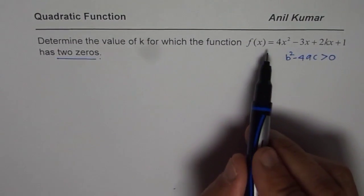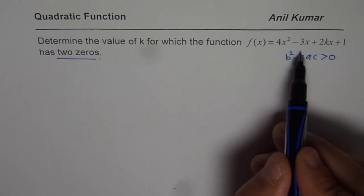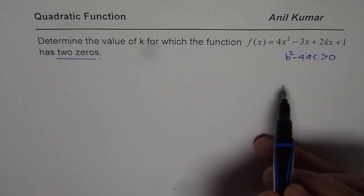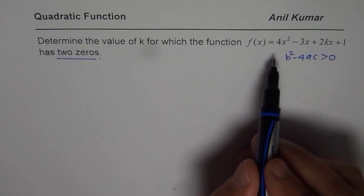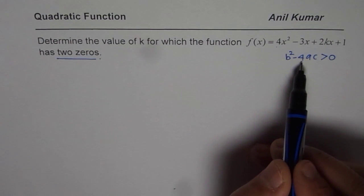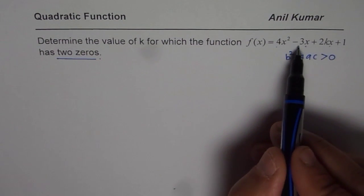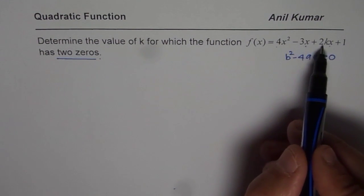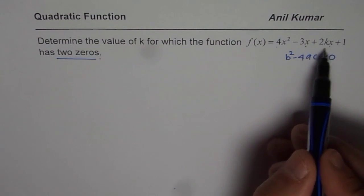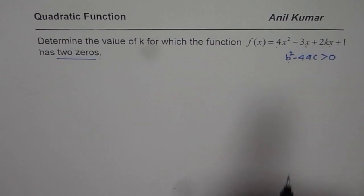Now the question here is, given this equation, what is a, what is b, and what is c? That is what we need to figure out. Now a is very clear, which is 4. For b, since x is in both minus 3 and 2k, we should factor x to get the value of b. c is 1 for us.